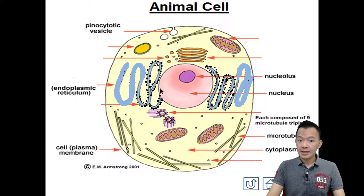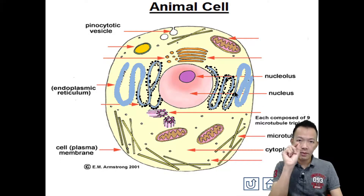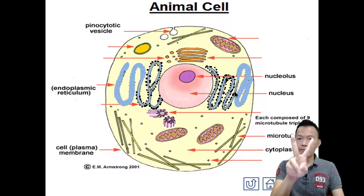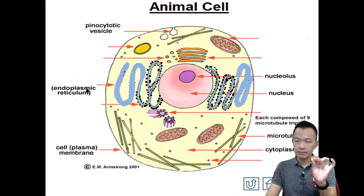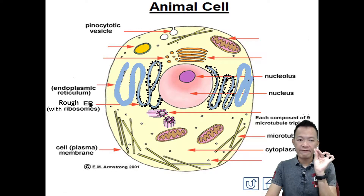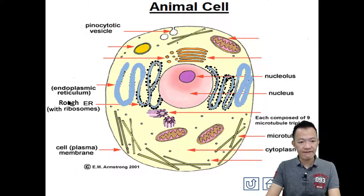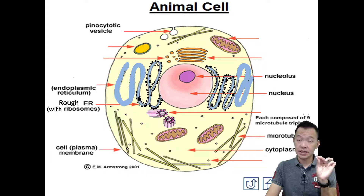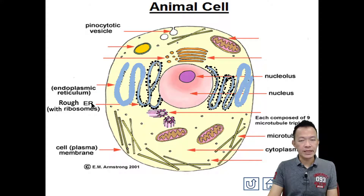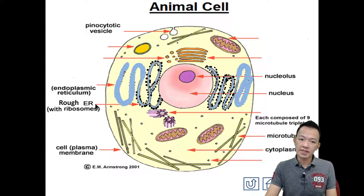Endoplasmic reticulum - in Chinese I honestly don't know the name. Endoplasmic reticulum is usually attached together with our nucleus. When we talk about endoplasmic reticulum, we can separate it into two types. We're having two types - one of them is called rough endoplasmic reticulum. But why do we call it rough endoplasmic reticulum? What makes it rough?